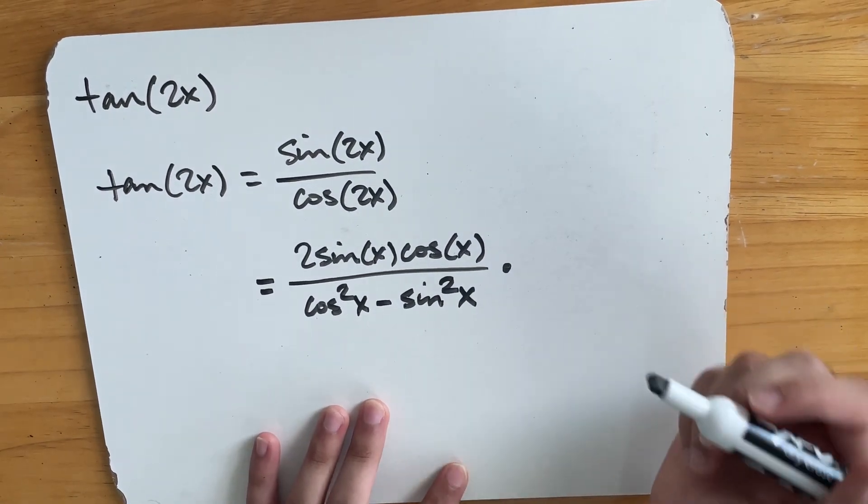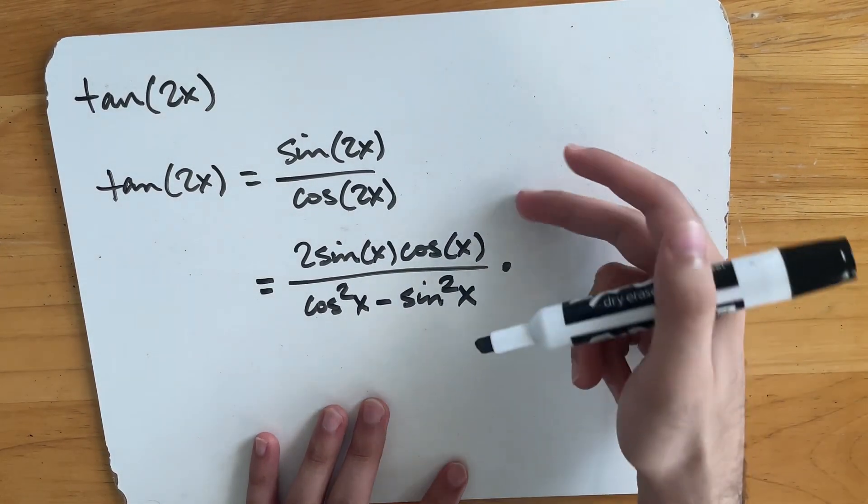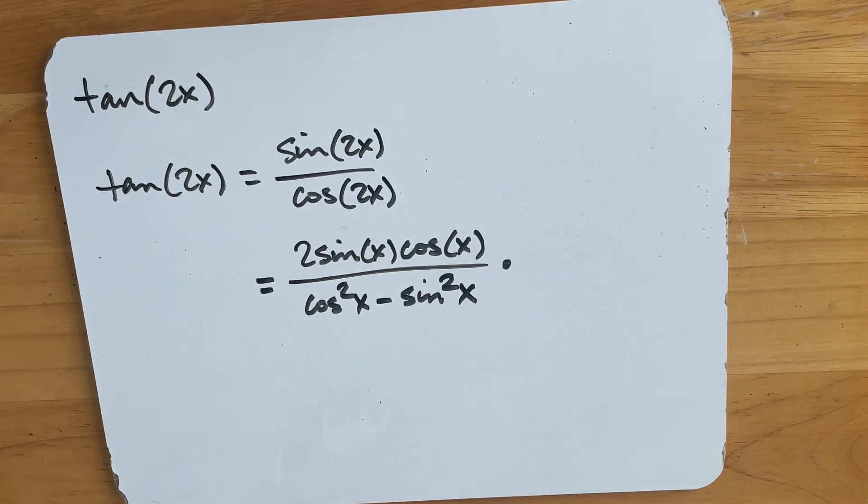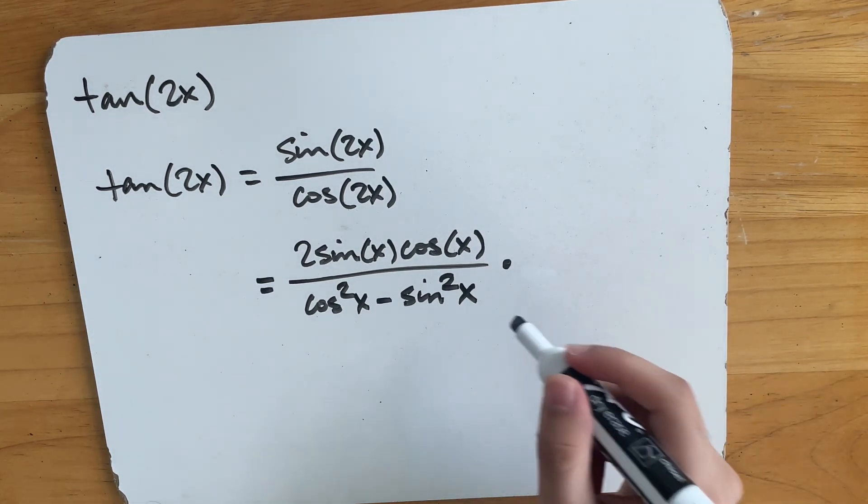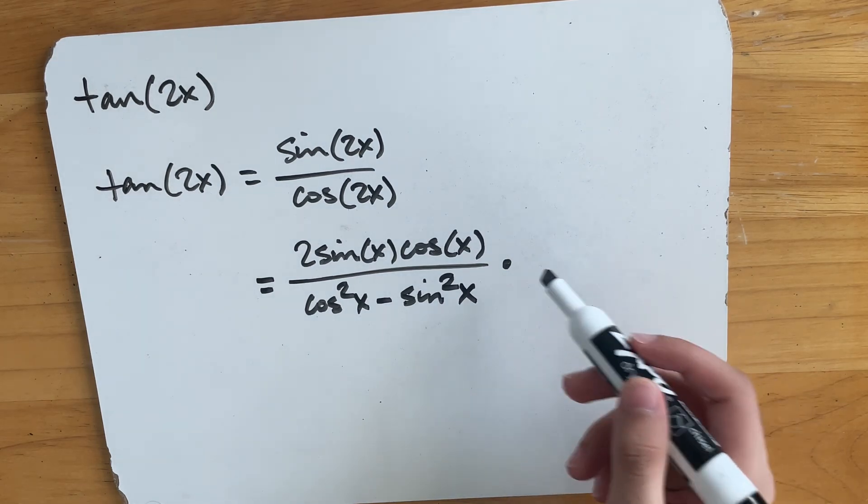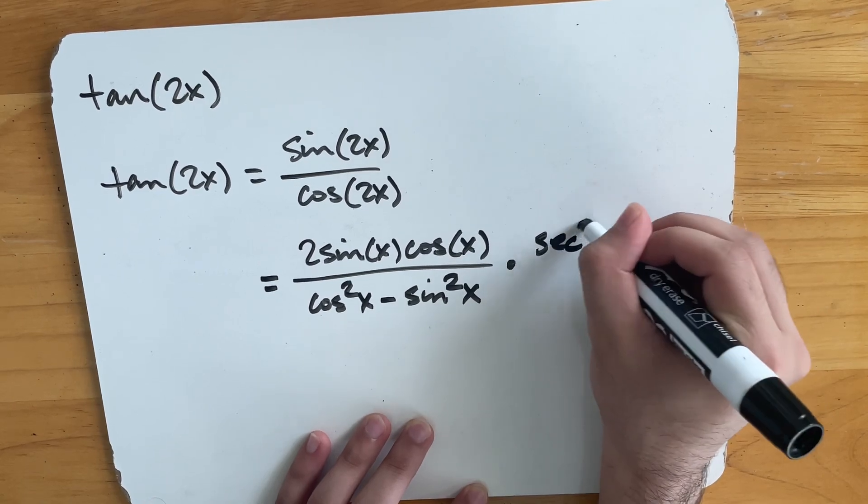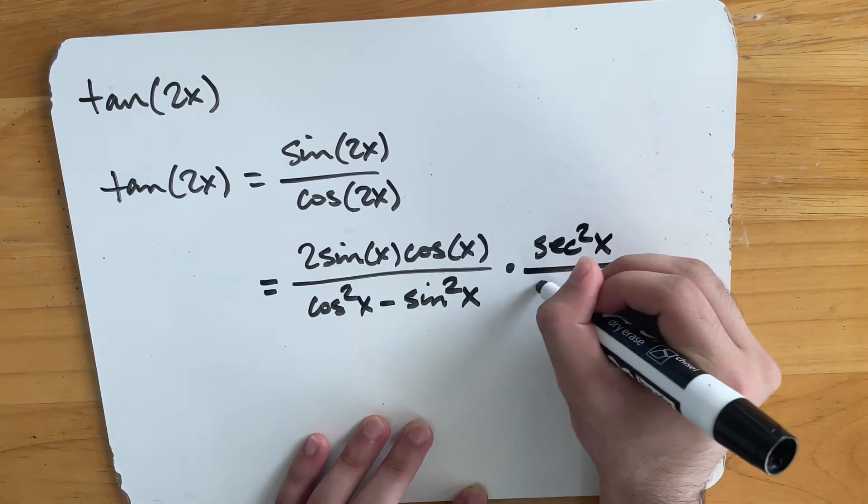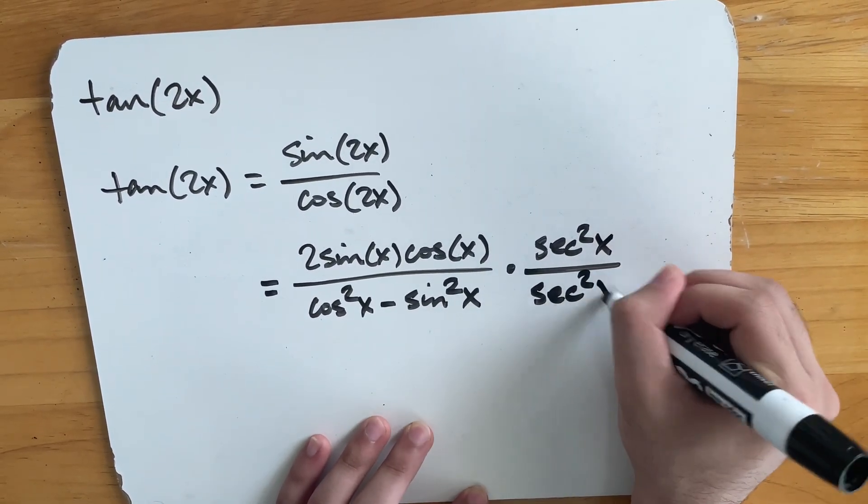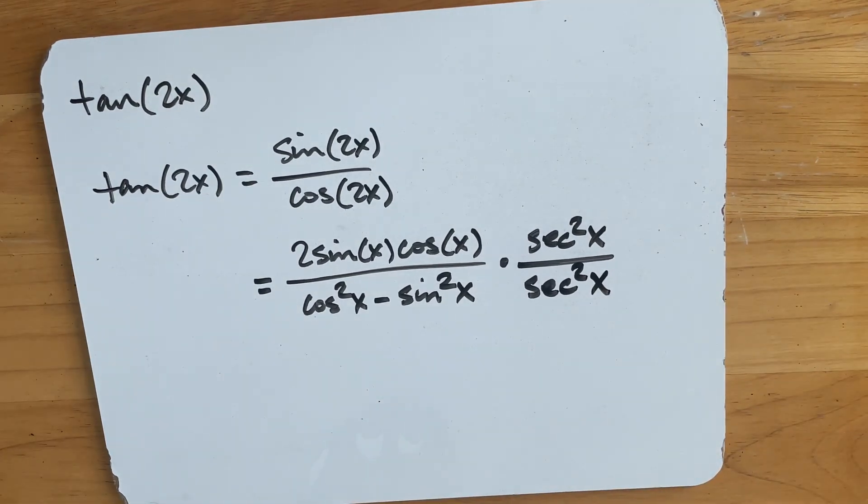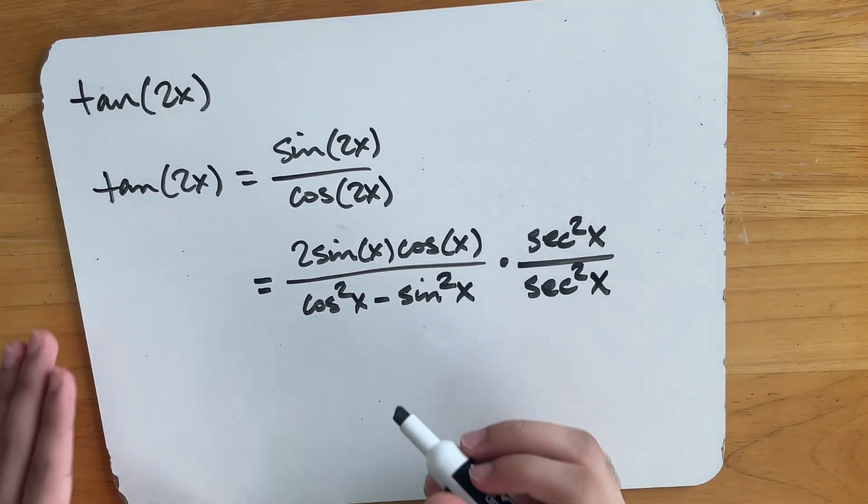Well, we will get a tan of x. So the reason why I'm writing a multiplication symbol is because instead of dividing by cosine squared x on top and bottom, I'm going to say you're going to multiply top and bottom by secant squared x. Right? Because that's the same thing as dividing by cosine squared x on top and bottom.